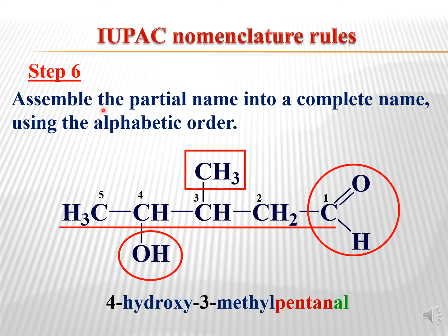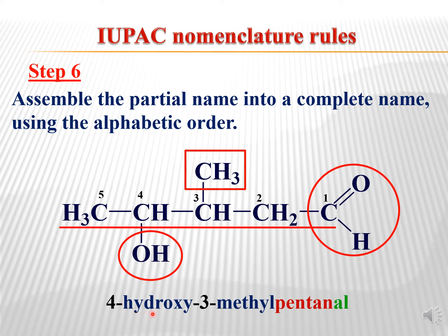In the sixth step we assemble the partial names into a complete name using alphabetical order. We now know all the components: the parent name, the principal functional group, and the prefix functional groups with their positions determined in step 5. We write the name as 4-hydroxy-3-methyl, because H comes before M alphabetically, so hydroxy is written before methyl.